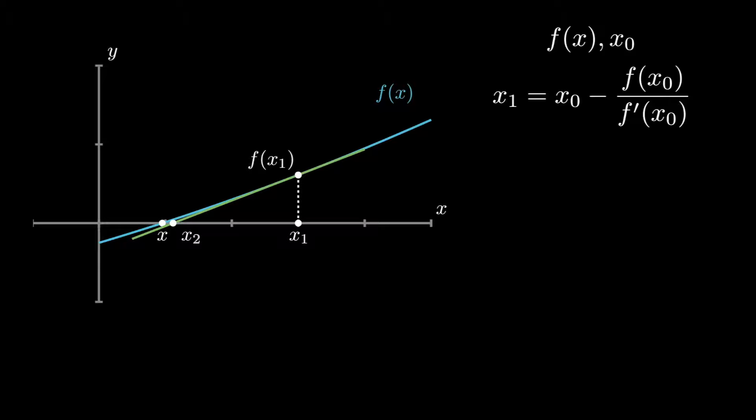Which is our newest approximation of the root and it is closer to x than x_1 is. The value of x_2 can be written as x_1 minus f(x_1) over f'(x_1).